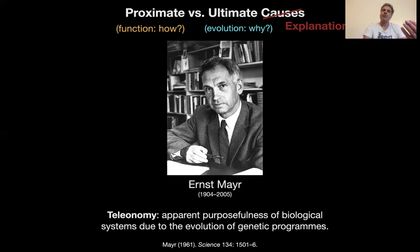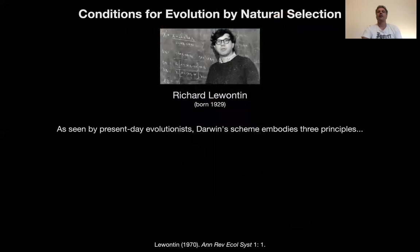Let's look at one of the simplest possible summaries of evolutionary theory. Darwin had one in The Origin of Species, but the most famous is Richard Lewontin's modern summary of evolution by natural selection — from his very famous paper, the first ever paper in the Annual Reviews of Ecology and Systematics.